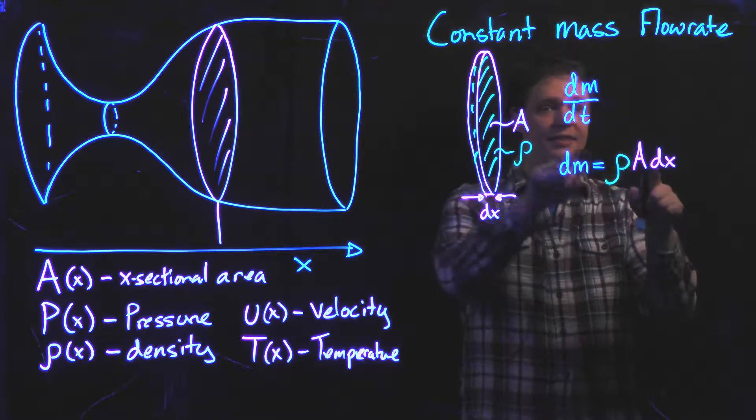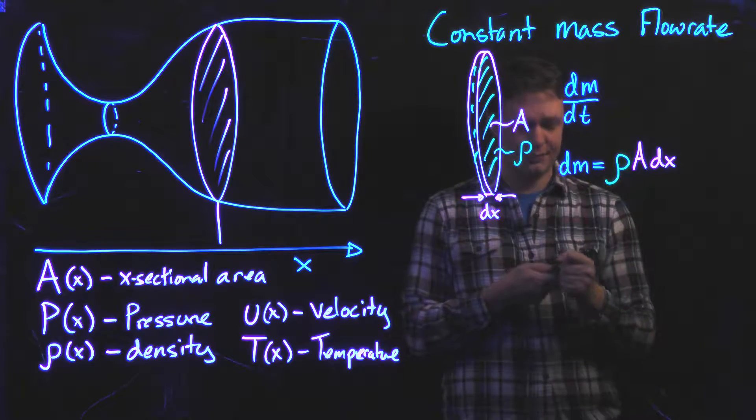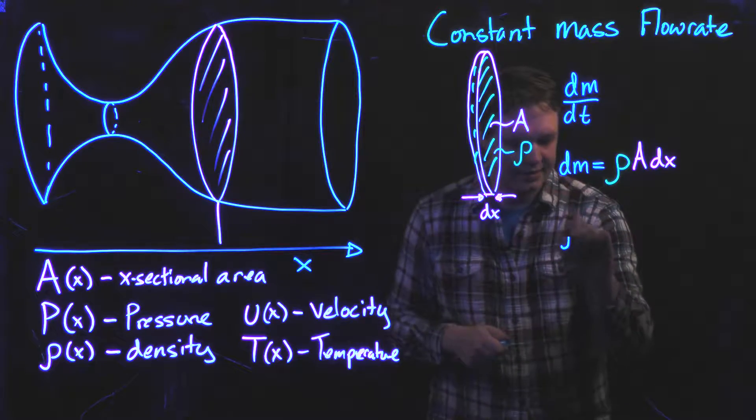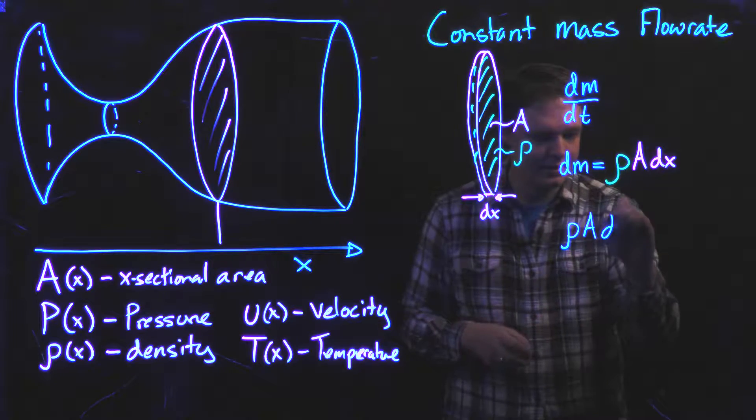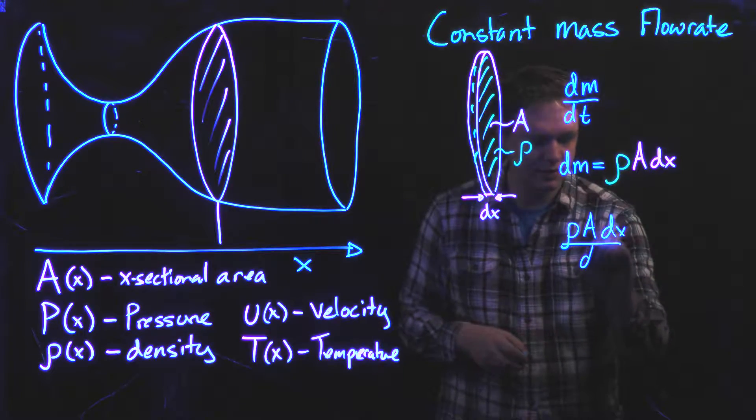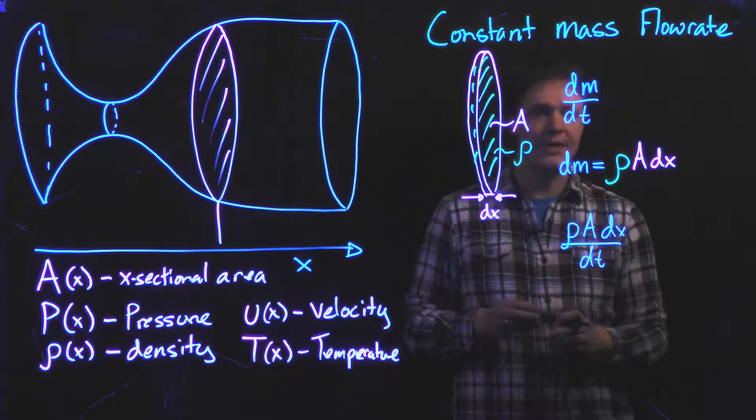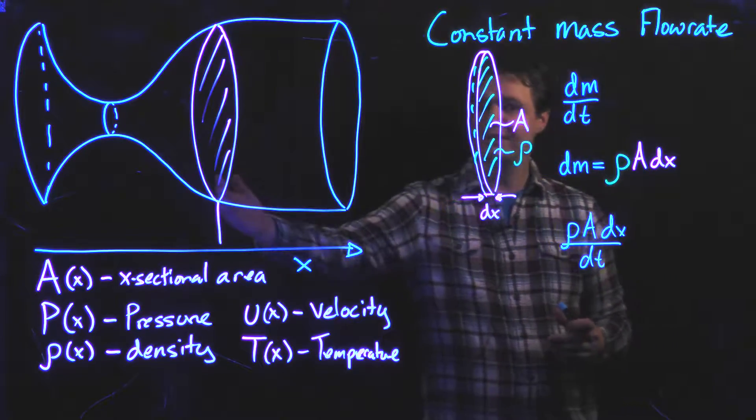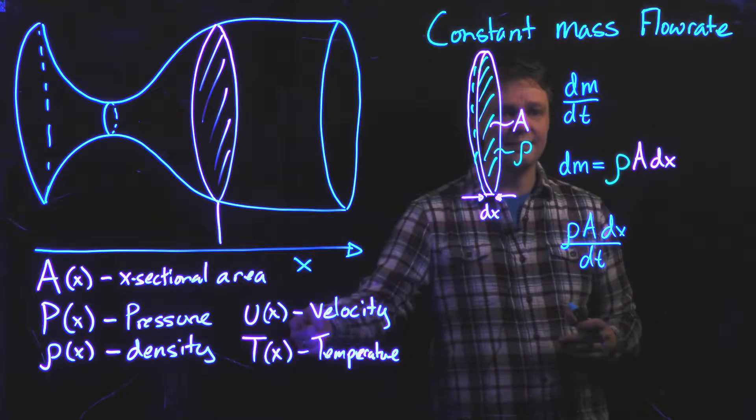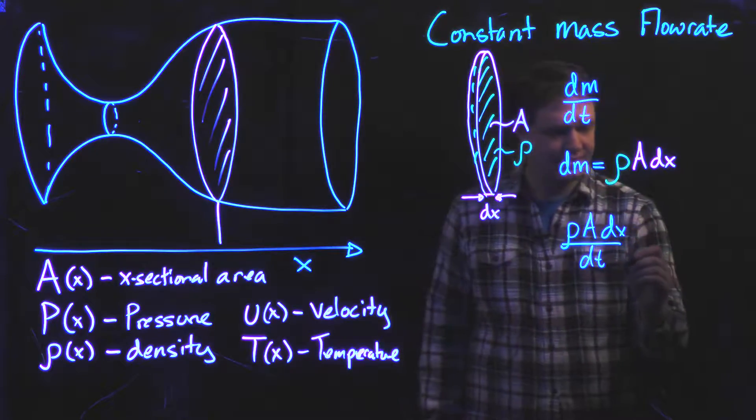When I then plug this formula into that expression for mass flow rate, I get ρA dx over dt. Or if I associate dx dt, that is the change in position and change in time, that's the x component of the velocity.